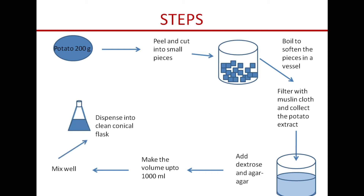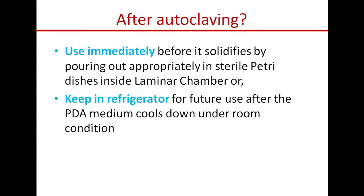We make the volume up to 1000 ml using distilled water, then mix and dispense the PDA medium into clean conical flasks. For a 250 ml size conical flask, fill up to 200 ml level - so for one liter of medium we get five flasks. After dispensing, plug the conical flasks and autoclave at 121 degree Celsius, 15 pounds per square inch pressure, for 15 minutes, to kill any microbes that may have contaminated the media during preparation.